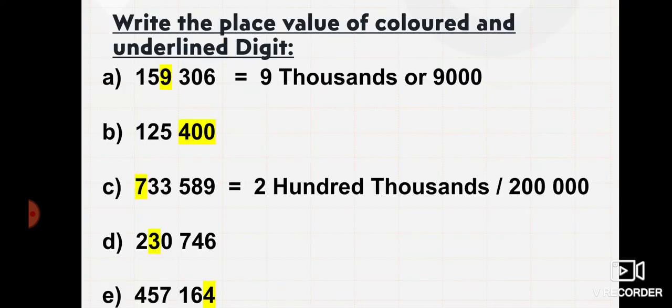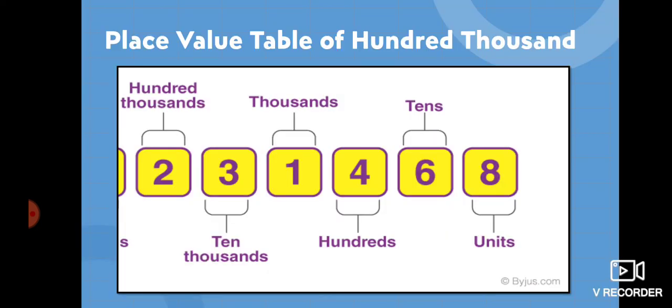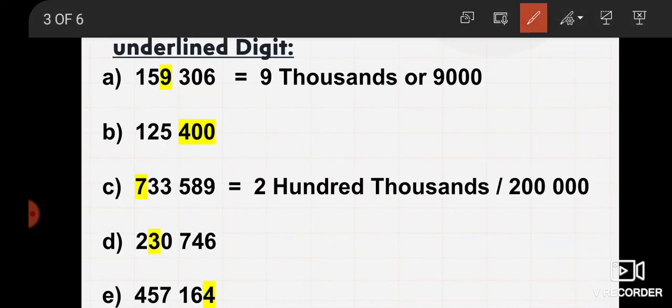So students, here we have write the place value of colored and underlined digit. To understand any digit number, we just have to know the place value. You can make a place value table as well if you don't know. You can see this is ones,